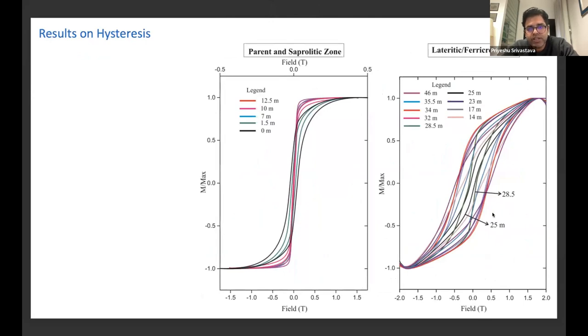Hysteresis was also done on these samples. We can see the clear changes from a typical coarse or PSD particle behavior towards the more wasp-waist signature in the saprolite itself, where we can say that mixed signature was being formed. When we can see the laterite and ferricrete zone, at certain point we again see this signature of bimodal population of magnetic mineral, where we have low coercivity as well as high coercivity mineral. Most of the samples show almost goose neck behavior, where we have very broad or very high coercivity antiferromagnetic minerals.